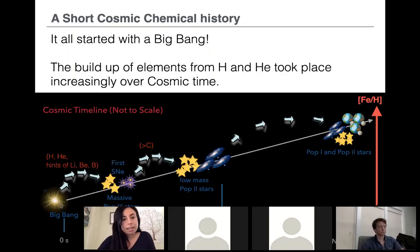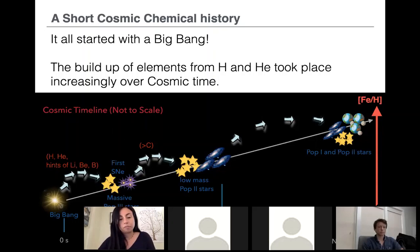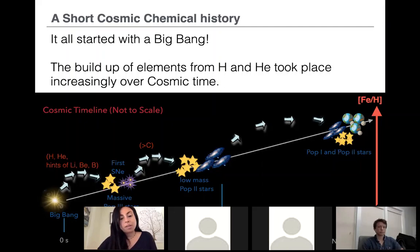Our understanding is that right after the Big Bang — a few seconds after — the universe was made mainly from hydrogen and helium, with little hints of lithium, beryllium, and boron. These elements formed the very first stars in the universe, which we now believe from simulations and observations were massive stars, so they were short-lived. At the end of their lifetimes, they exploded with energetic supernovae that ejected the very first heavy elements — anything heavier than boron, from carbon onward — into the interstellar medium.